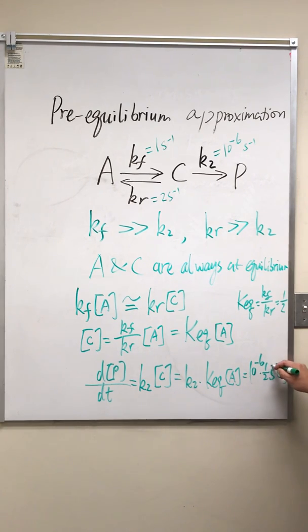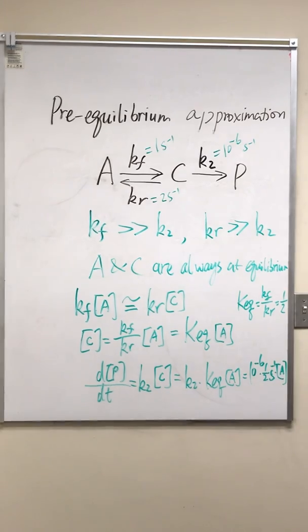I forgot to put the unit here. That's how fast P is produced. This is first order with respect to A. Done.